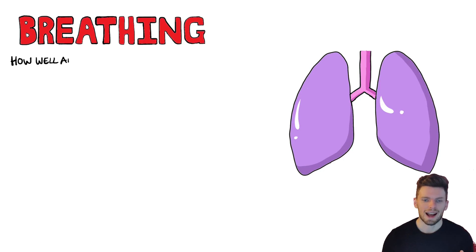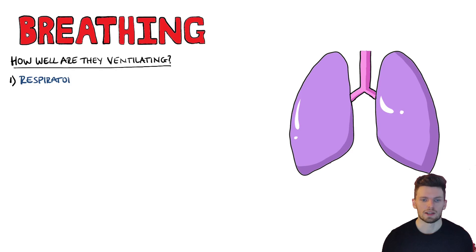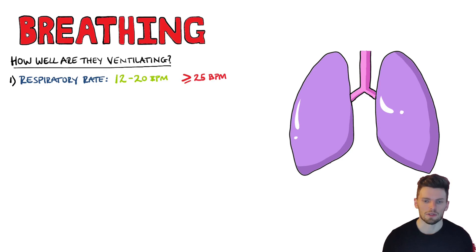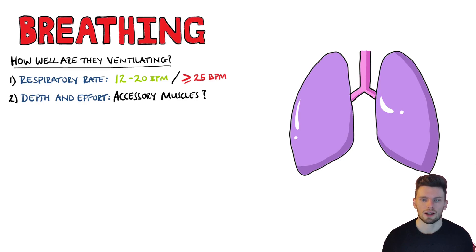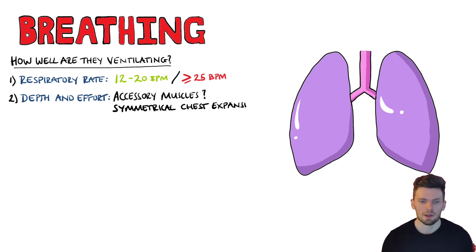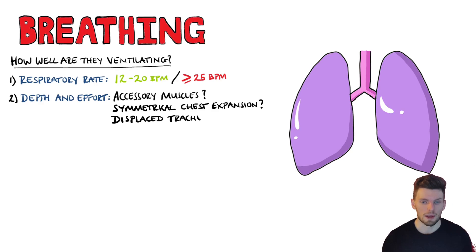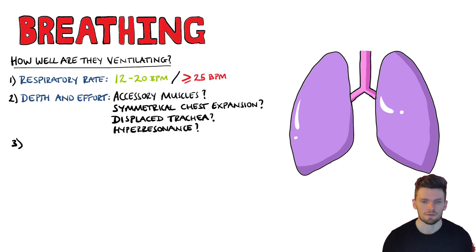B is for breathing — we're looking at how well the patient is ventilating. A normal respiratory rate is between 12 and 20 breaths per minute; higher than 25 is a marker that the patient may deteriorate quickly. We also look at the depth and effort of breathing: are they using the accessory muscles? Is the chest expansion symmetrical? Is the trachea displaced, or is there hyperresonance?